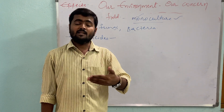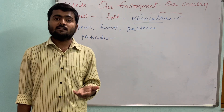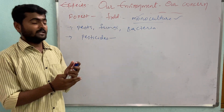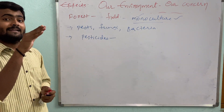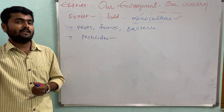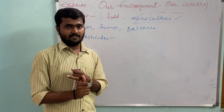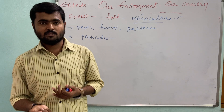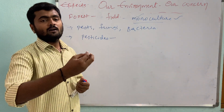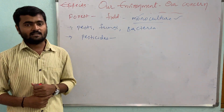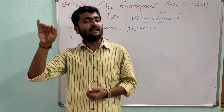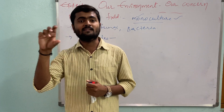Pesticides also kill predators that control harmful insects, and they kill prey organisms that are food for birds and other insects. Therefore, using chemicals like herbicides and pesticides not only kills useful organisms but also disrupts food chains, making the ecosystem imbalanced.